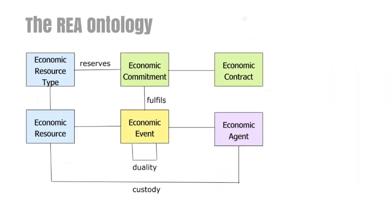We are now in a position to complement the previous basic REA ontology. We now have the economic contract, which groups together a number of economic commitments. Note that there is a relationship called 'fulfills' between economic events and economic commitments. This means that when an economic event is carried out, it fulfills an economic commitment. For example, when a customer pays, she thereby fulfills her previous commitment to pay. After the payment, the commitment doesn't exist anymore.